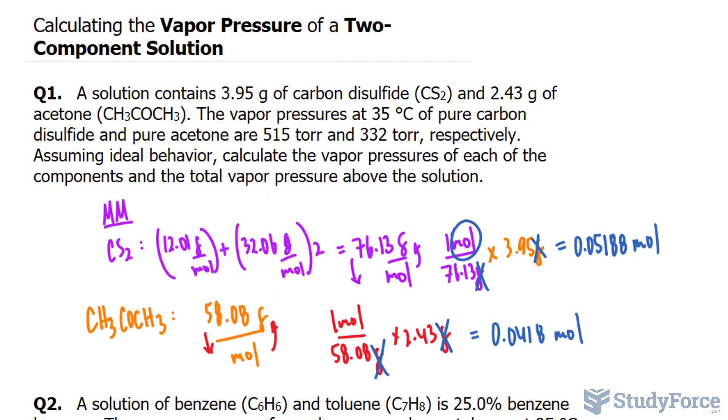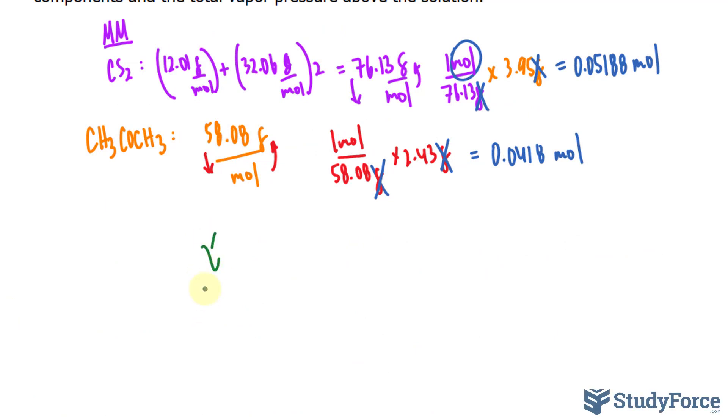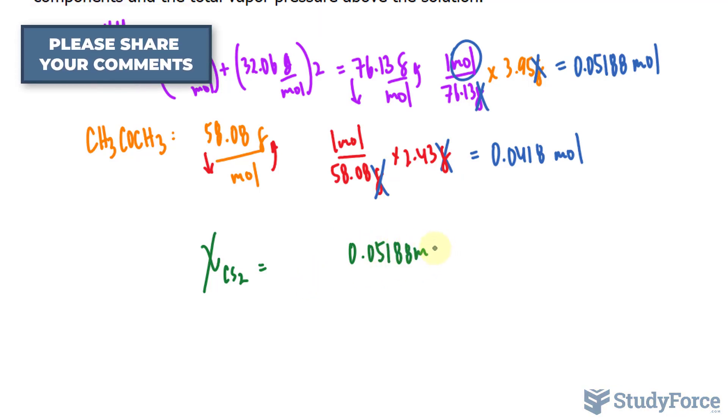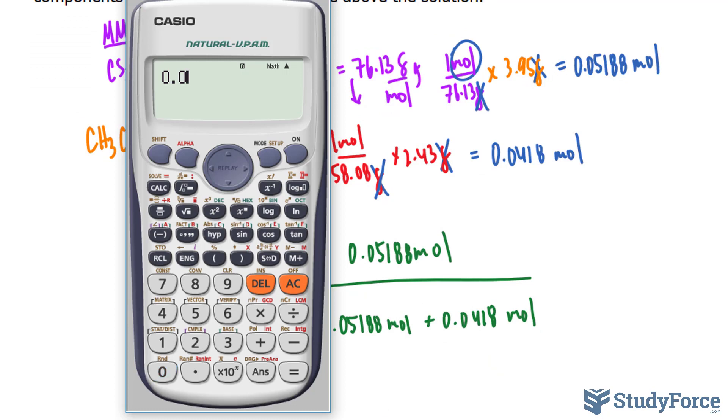As mentioned before, I'll use the moles to obtain the mole fraction of each of these components. So starting with carbon disulfide, the formula for the mole fraction, represented by this X symbol, CS2 is equal to the number of moles, which we found to be 0.05188 moles, over this number again, plus that. Let's calculate this. 0.0518 divided by 0.0518 plus the previous number that we had calculated, which was that. And we end up with the mole fraction of CS2, which is 0.55318.